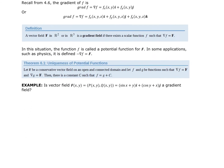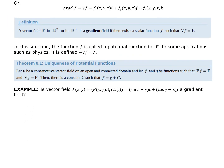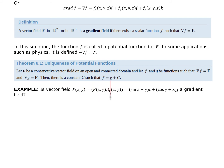We also have a uniqueness property: let F be a conservative vector field on an open, connected domain, and let f and g be two functions such that ∇f = F and ∇g = F. Then there must be a constant c such that f = g + c.